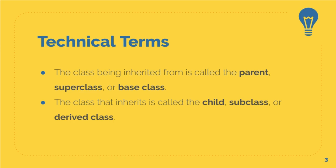It's called the child because it inherits attributes and methods from a parent — just like we inherit our traits from our parents, the child class inherits something from a parent class. It's also called a subclass because the word sub means below. Just like super means above, sub means below. So this is a class that sits below and takes something from the class that sits above it.